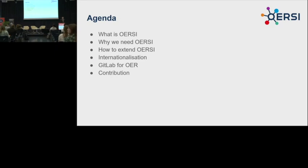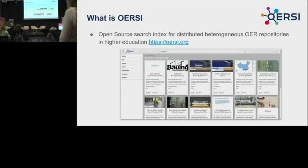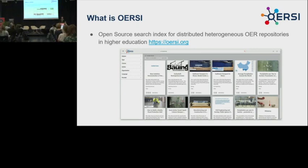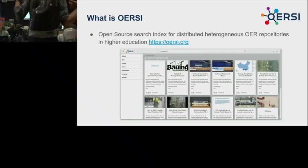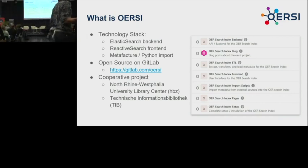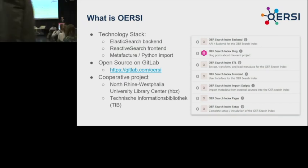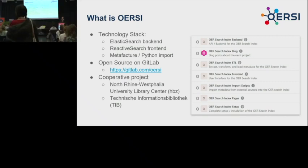ERSI is a lightweight search index where we connect different heterogeneous repositories from all over Germany, available at ERSI.org. The technology stack includes an Elasticsearch backend, a ReactiveSearch frontend, and a connection with Metafacture to interface with different repositories. The whole project is open source and could be reused for other projects, for example to build a regional search index harvesting from learning management systems or regional university repositories, which could then connect back to ERSI.